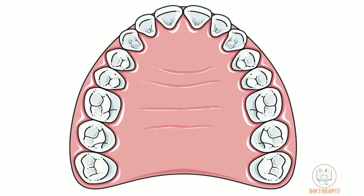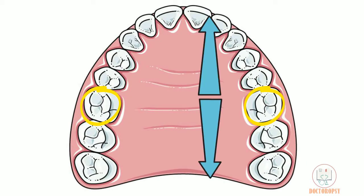It is positioned approximately at the middle of a fully grown jaw and erupts posteriorly. Due to the significance of its location, it is also called the cornerstone.